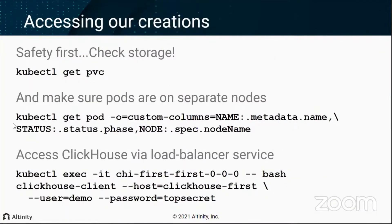Once the cluster comes up, do some safety checks. List your persistent volume claims to confirm you have storage. Check that pods are on separate nodes using kubectl magic to list pods and show which VM or host they're on. Finally, exec into the pod - same as Docker allows - run the ClickHouse client, and test that your 'demo' user with password 'top_secret' works. With that, you have a cluster. Change the file and resubmit it, and the operator automatically updates the cluster to match.